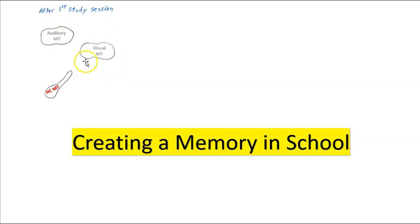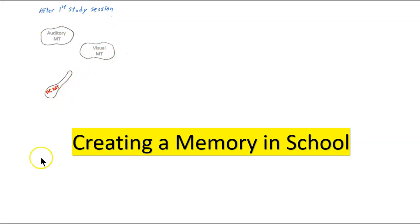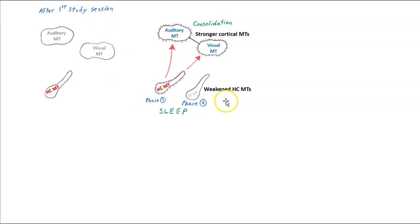We'll look at the human brain. We've got our cortical systems here and the hippocampus. After the first study session, we have weak memory traces in the cortex and a strong memory trace in the hippocampus. And then we go to sleep.